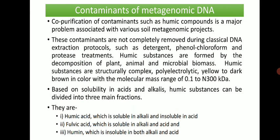Humic acid is a major component of soil, providing nutrients to crops and plants. It plays roles in soil fertility and water-holding capacity, and is a normal soil component. However, from a metagenomic analysis perspective, it is a contaminant. Co-purification of humic acid compounds is a major problem associated with soil metagenomic projects.